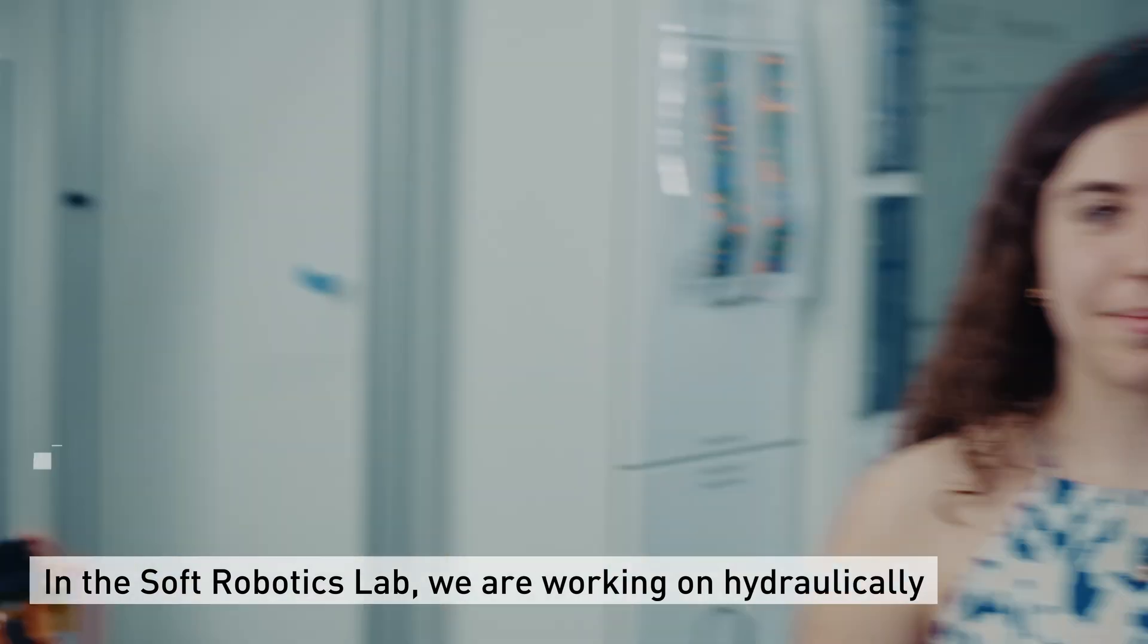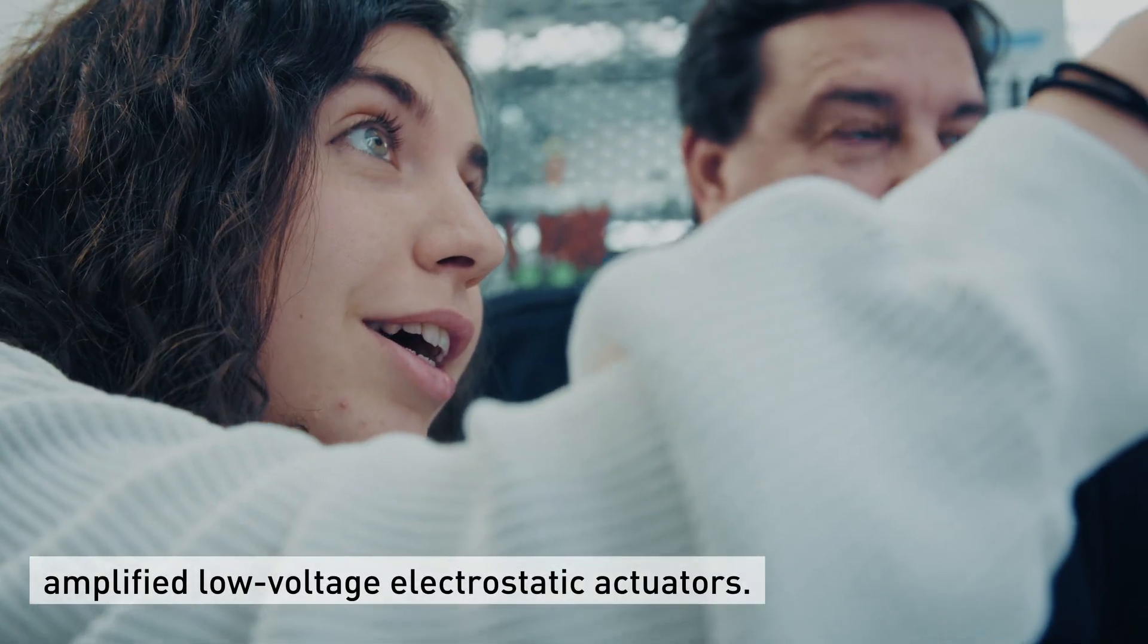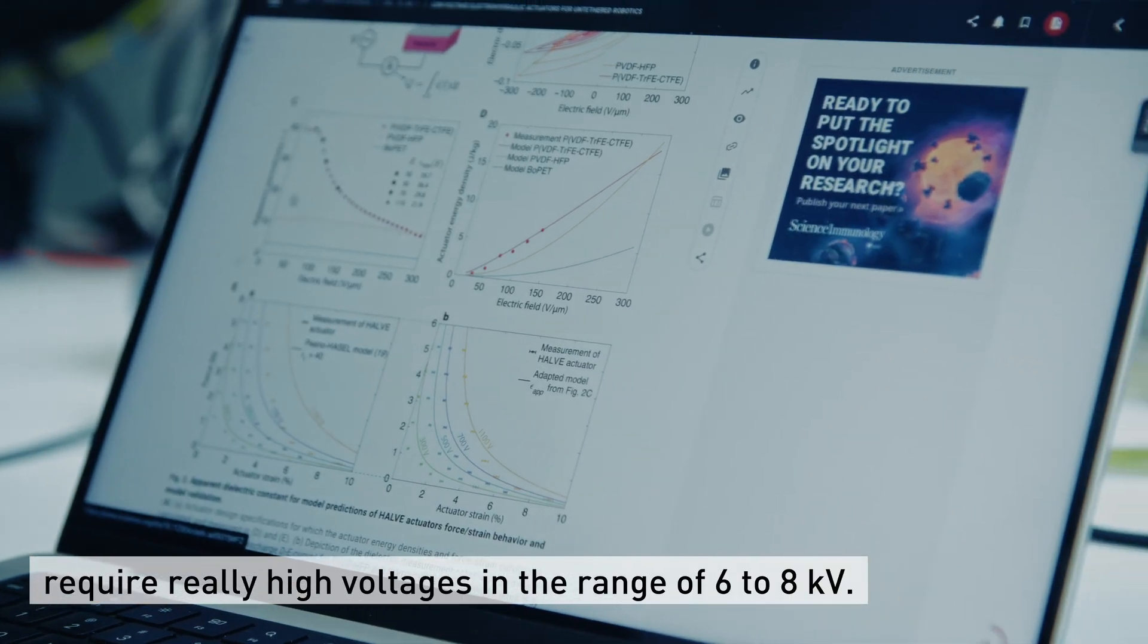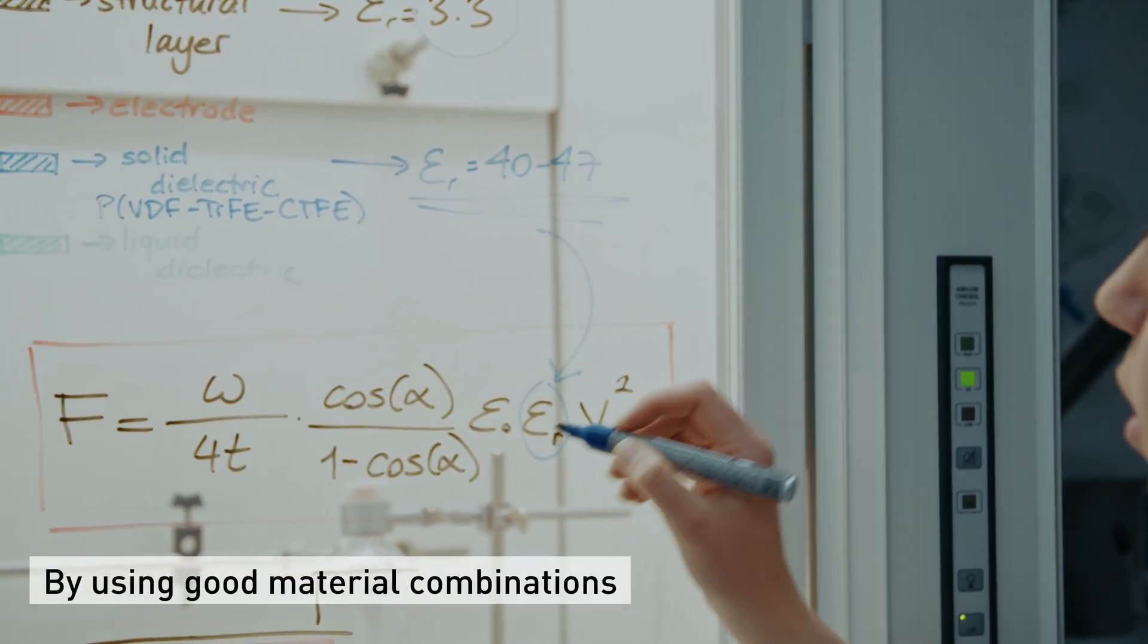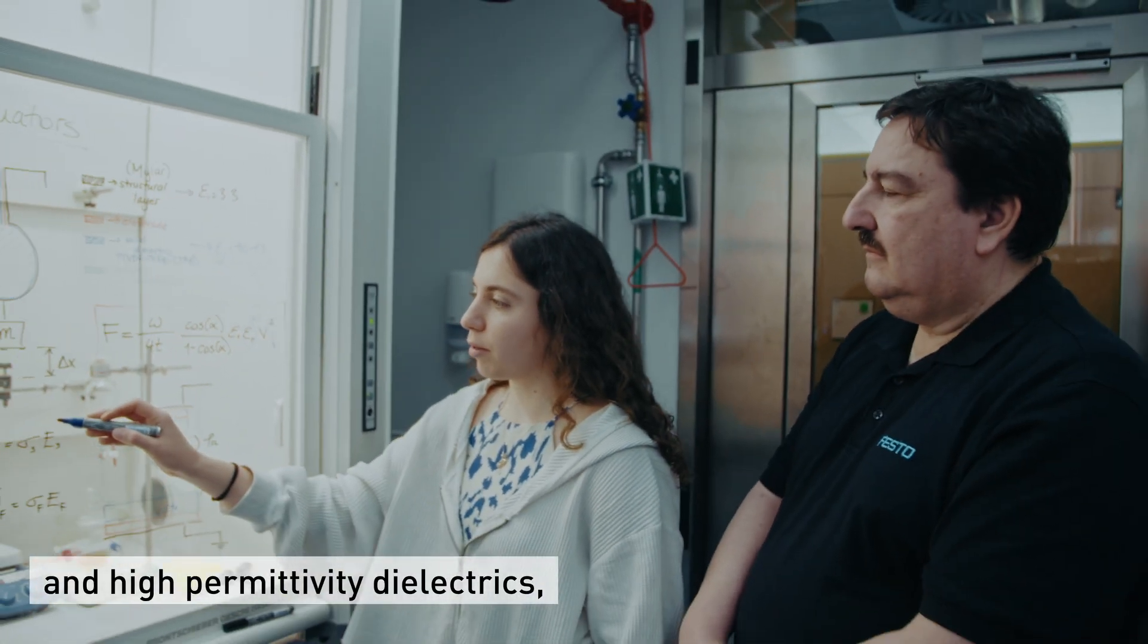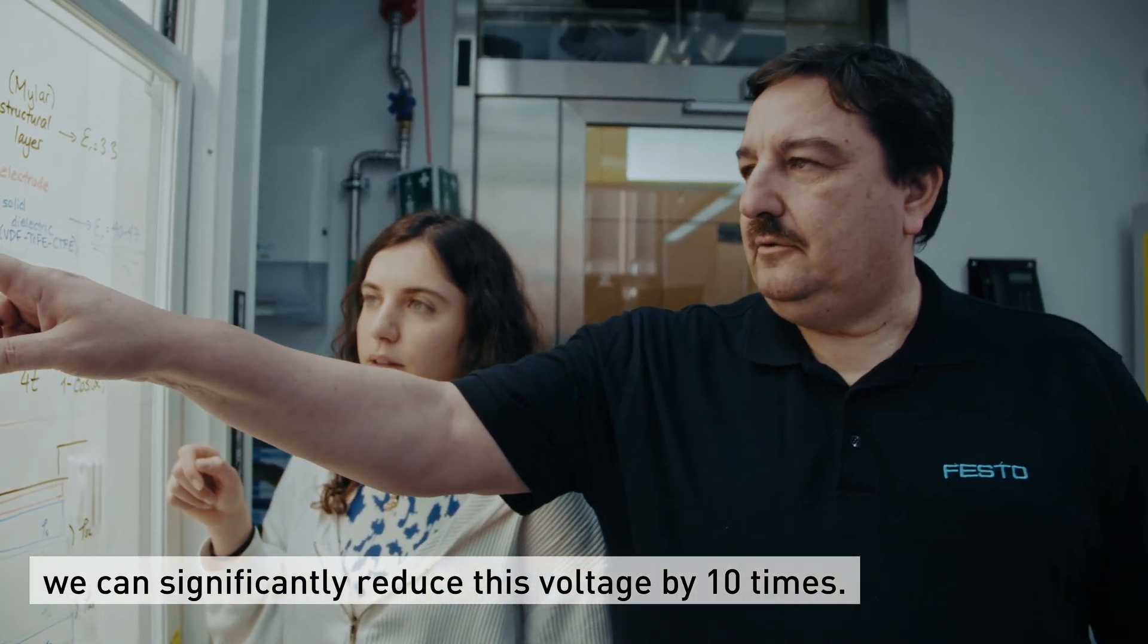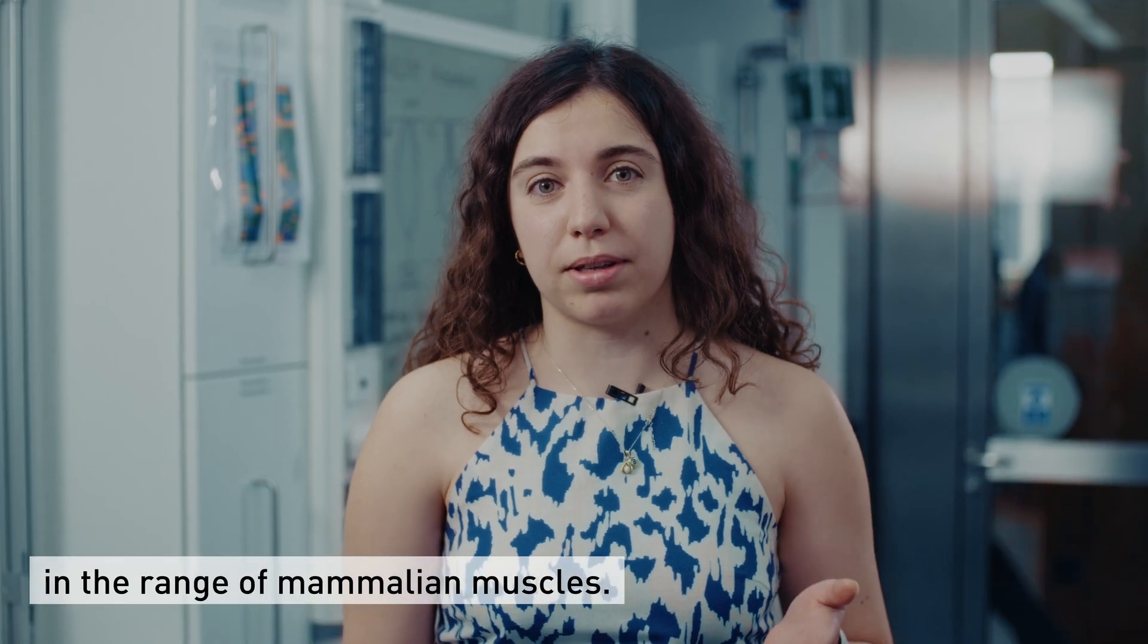In Soft Robotics Lab, we are working on hydraulically amplified low-voltage electrostatic actuators. Conventional electrostatic actuators require really high voltages in the range of 6 to 8 kV. By using good material combinations and high permittivity dielectrics, we can significantly reduce this voltage by 10 times. And this helps us to achieve a power density in the range of mammalian muscles.